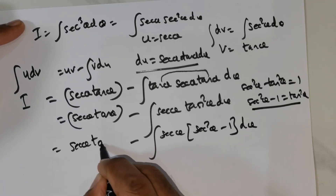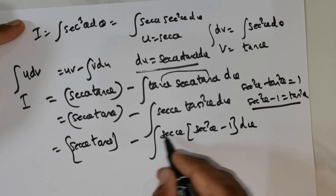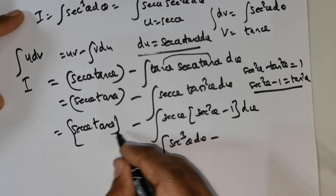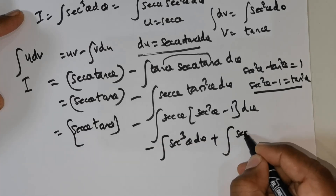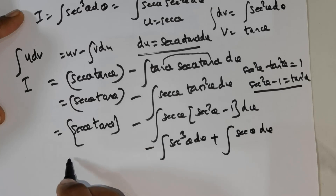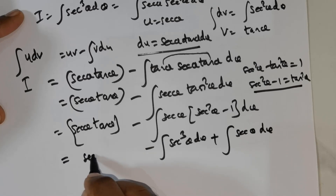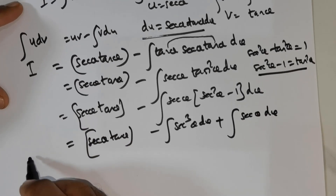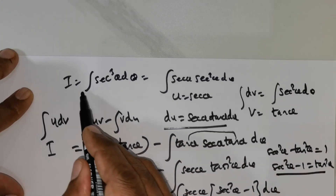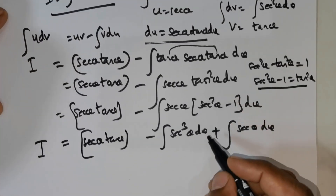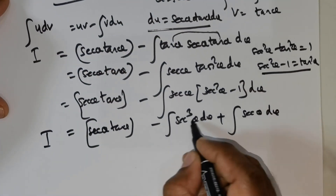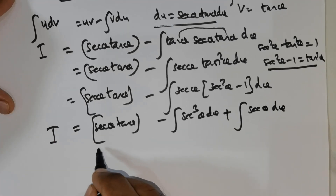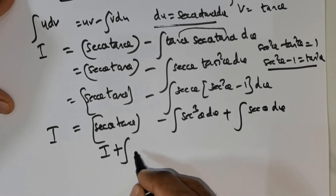Expanding: I get integral of secant cube theta d theta minus integral of secant theta d theta. Over here I have secant theta tan theta. Since I defined I to be integral of secant cube theta d theta, there is an I on the right side, so I push this to the other side: I plus I gives 2I.